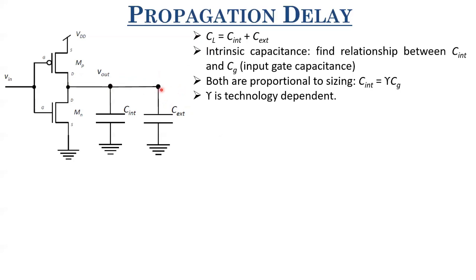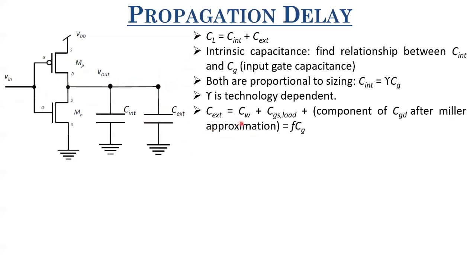C_external consists of the wiring capacitance plus the gate capacitance of the load it has to drive, plus a component of CGD after Miller approximation. The CGD component after Miller approximation: similarly, we saw that CGD/2 comes at the output node if the gain is minus one. However, since CGD is pretty small, we neglect it. So C_x is approximately C_w plus CGS_load. The CGS_load depends on fanout. If this inverter is driving four other inverters, then C_x will be dominated by four times the gate capacitance of all those four inverters.